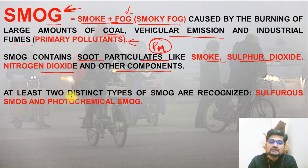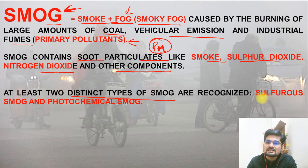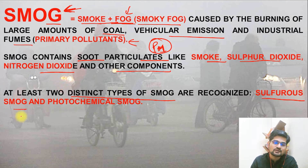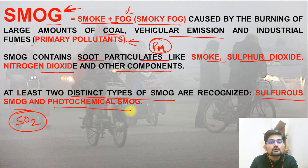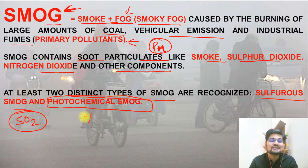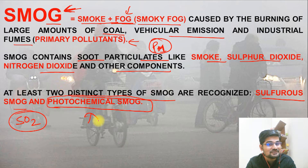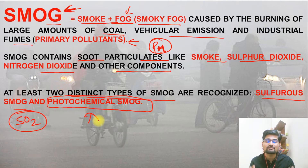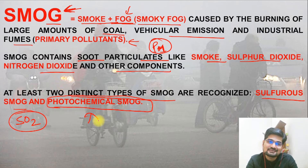At least two distinct types of smog are recognized: sulfurous smog, where you have sulfur dioxide, and photochemical smog, which is very interesting. Let's understand these two types — why is it called photochemical, what is sulfurous smog, and how are they formed?